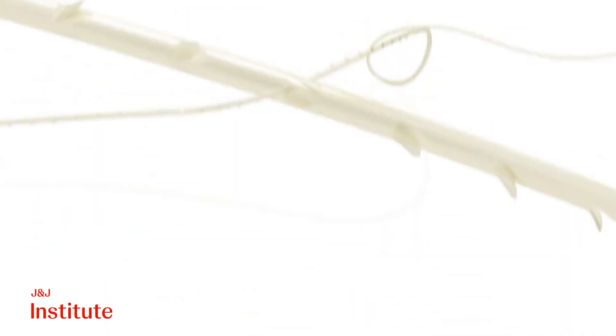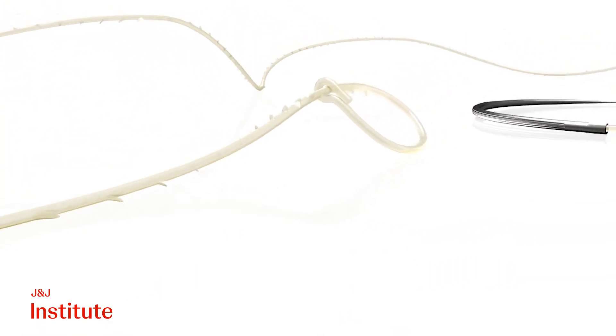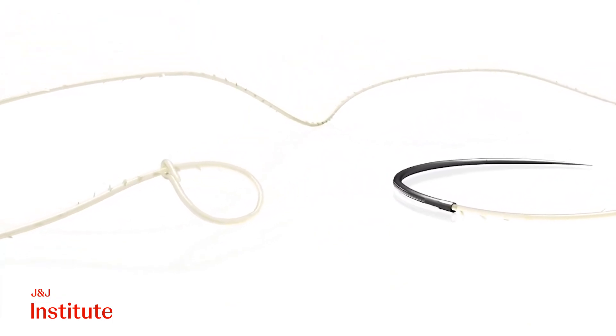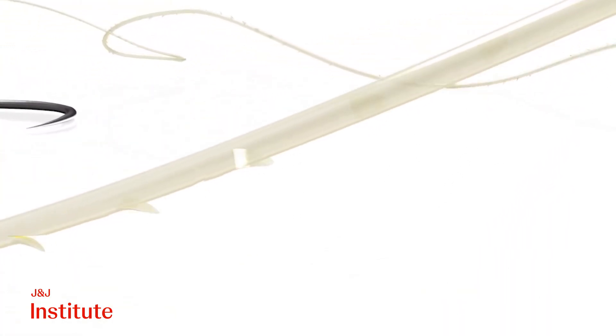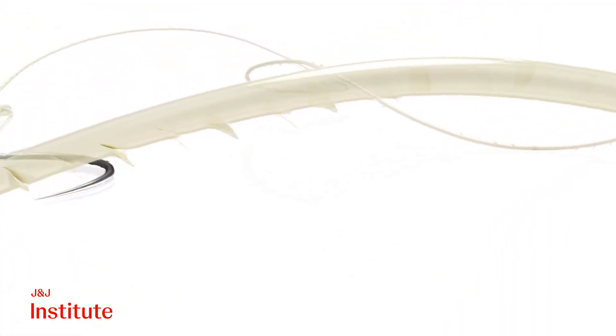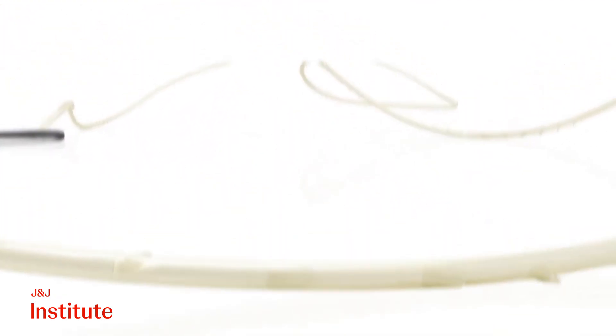In this demonstration, I'll illustrate a subcuticular closure using the Stratofix Spiral 3O suture composed of polyglacaparone 25, an absorbable material commonly known as monocryl plus. Usually, the suture is undyed, but I am using a dyed variant over here for ease of visualization.